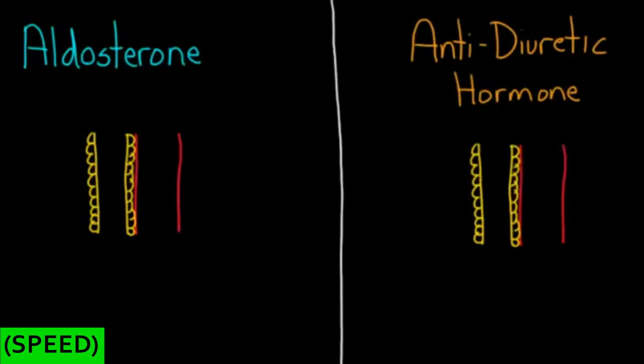And in this tubule, we know that on one side, on this aldosterone side, we have more permeability. So this membrane that separates the two, or this layer of cells, is water permeable. But over here, we know on the ADH side, is not water permeable. And the reason I'm saying it's different is because although they look similar, these are different parts of the nephron.